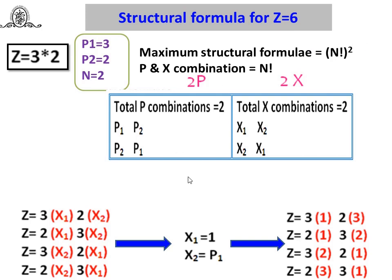How many combinations can you obtain between p and x? It equals n factorial. Here n equals 2, so 2 factorial. You get p combination equal to 2 and x combination equal to 2. The total p combinations are 2 and total x combinations are 2. These combinations are: p1 and p2, then p2 and p1. Similarly for x: x1 and x2, and x2 and x1. Using these four combinations you can write four different structural formulae.